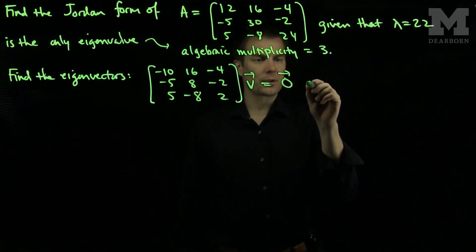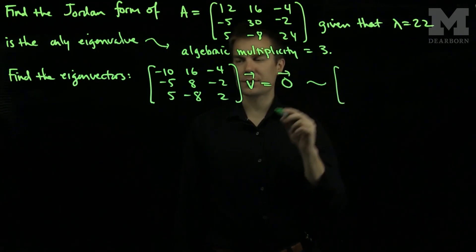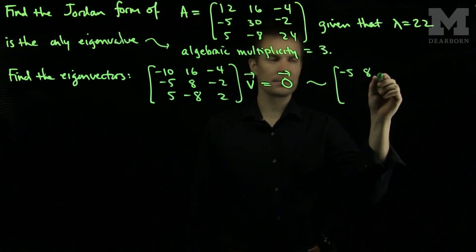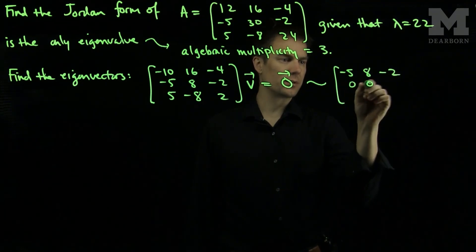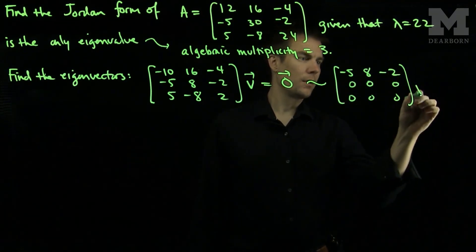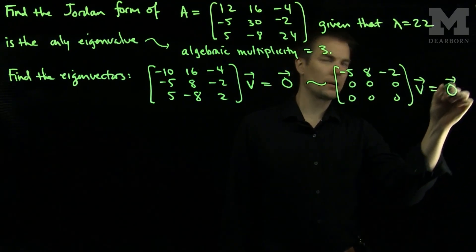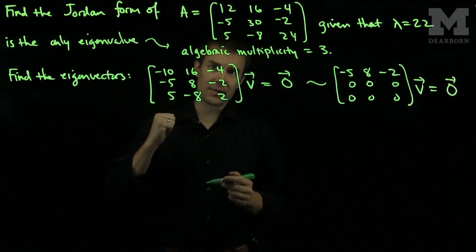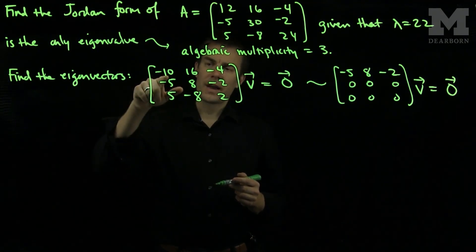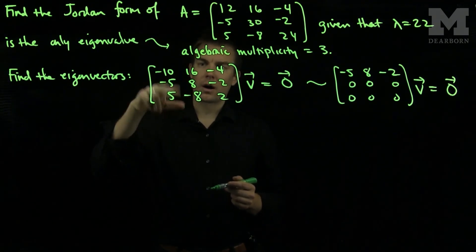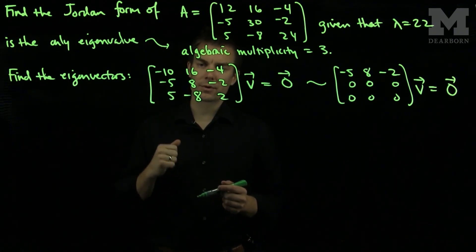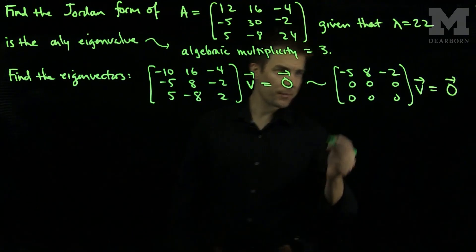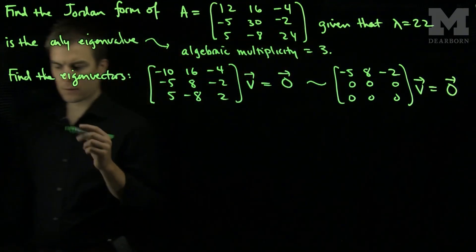We can row reduce this matrix by elementary row operations to get [-5, 8, -2; 0, 0, 0; 0, 0, 0] applied to V equals the zero vector, because the second and third rows are opposites of each other, so we add them to eliminate the third row. The first and second rows are multiples of each other, so we add a multiple of the first row to eliminate the second row and rescale.